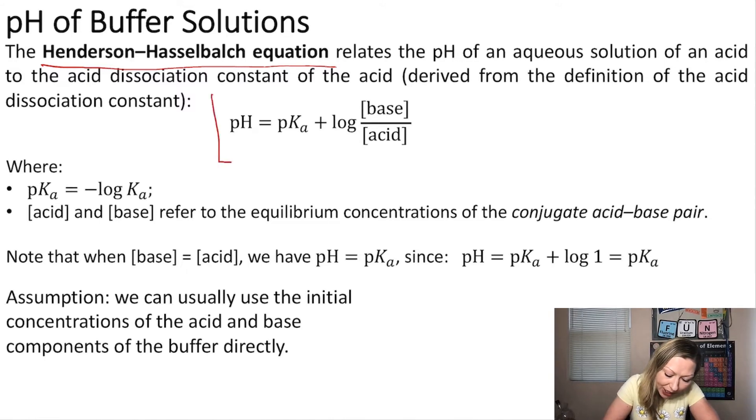So pH equals pKa, which is the acid dissociation constant, plus the log of the concentration of the base divided by the concentration of the acid.